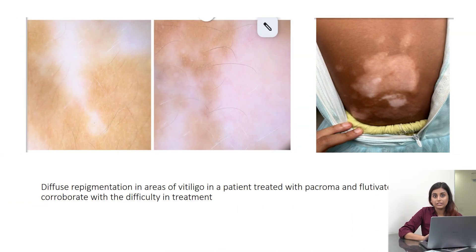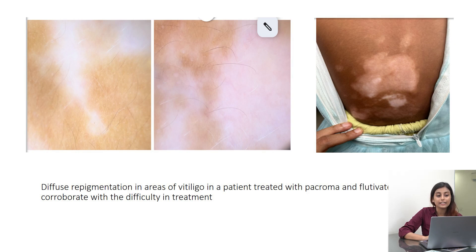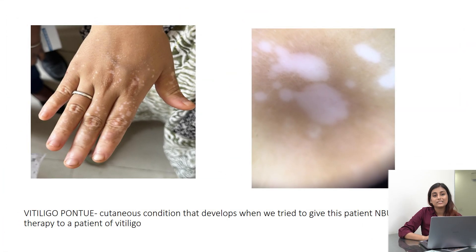If we treat a patient, there is diffuse repigmentation that can be seen in some patients. In those areas of diffuse repigmentation, we also see white hair strands, which is leucotrichia, and it indicates difficulty in treatment — corroborative with the history that we had to treat the patient for a very long time. Besides that, this is called vitiligo punctata: we see confetti-like macules when we treat a patient with NB-UVB, and on dermoscopy we see findings classic of vitiligo.